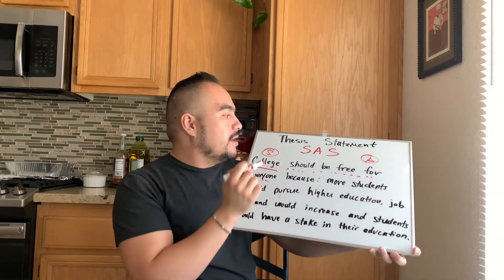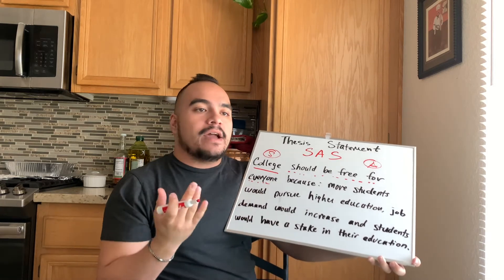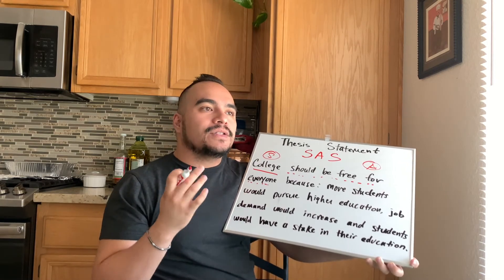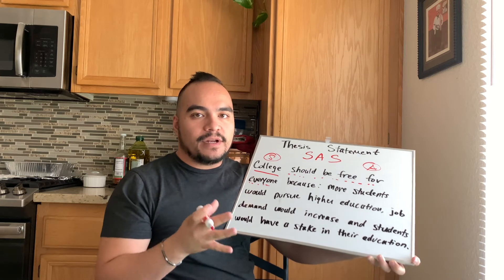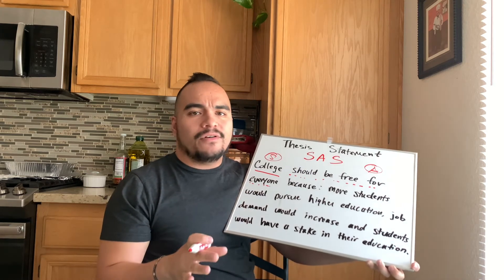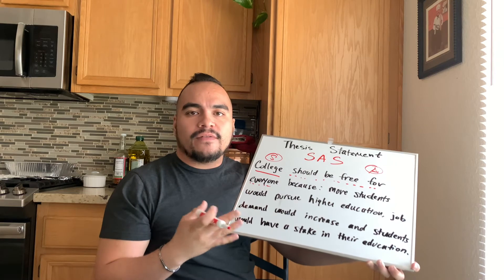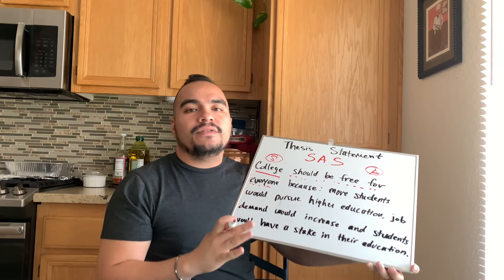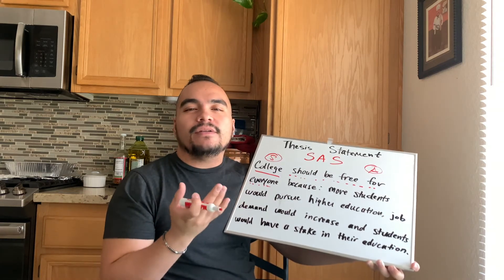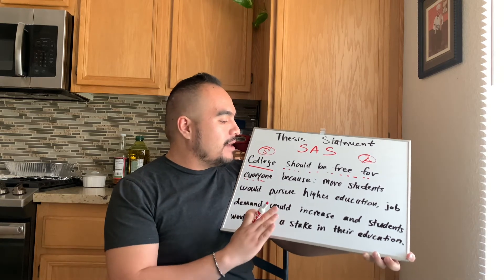So we have our subject, our argument, and our supporting details. Our supporting details — we want to make sure we have about two to three supporting details in a thesis statement. Don't go overboard. Don't do four or five because you're just doing more work for yourself. So just do about two to three. Now, how many do we have here?